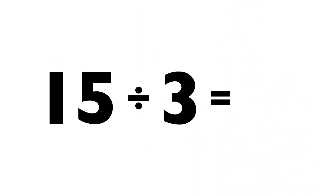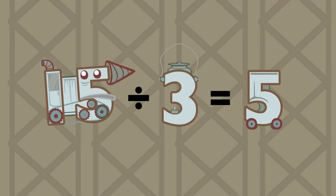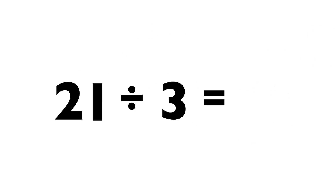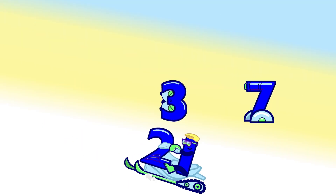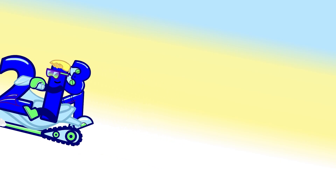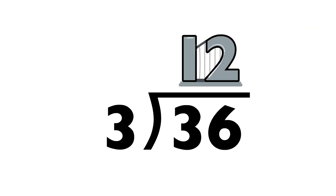Fifteen divided by three equals five. Twenty-one divided by three equals seven. Thirty-six divided by three equals twelve.